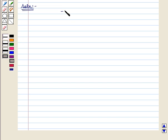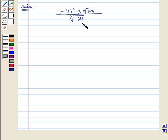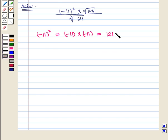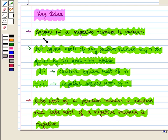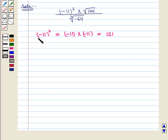We have to evaluate the expression: minus 11 whole square, into square root of 144, whole upon cube root of minus 64. In the numerator, minus 11 whole square equals minus 11 into minus 11, which equals 121. From the key idea, the square of a negative number is positive, and here we confirm the square of this negative number is positive.